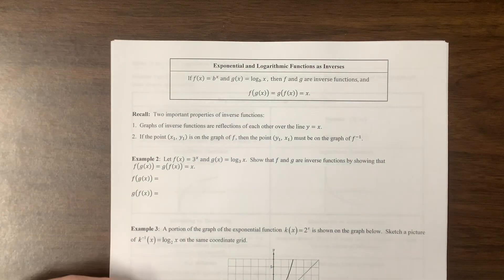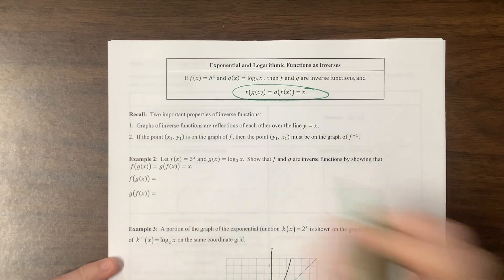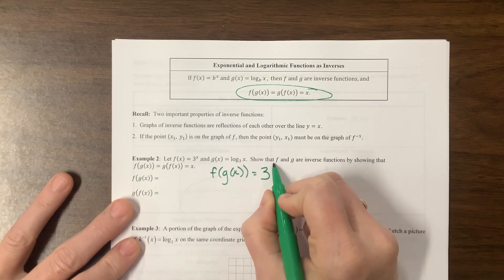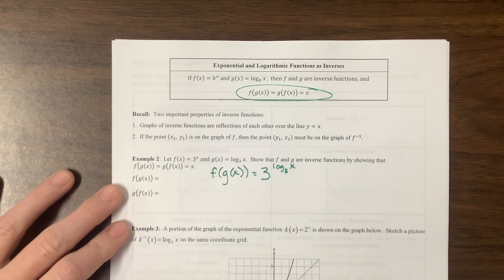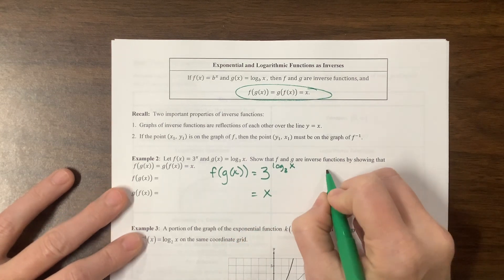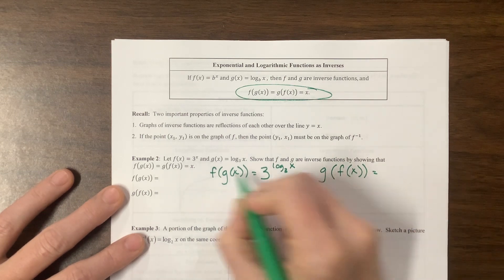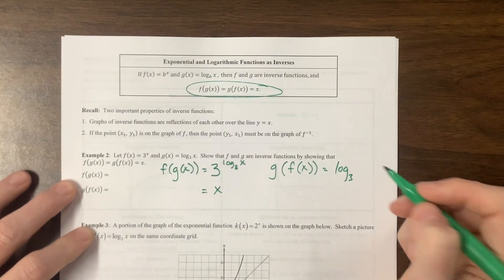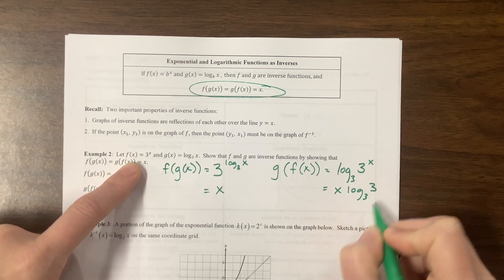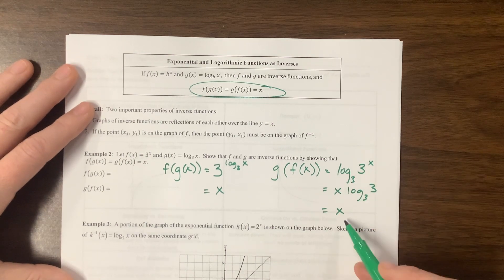An exponent and a log are inverse functions. Remember that inverse functions occur when f of g of x and g of f of x are both equal to x. So f of g of x equals f of log base 3 of x, which equals 3 to the log base 3 of x — and when those bases are the same, we're just left with x. The other one: g of f of x equals log base 3 of 3 to the x. The exponent comes out in front, giving us x times log base 3 of 3, which is x times 1, so just x. You can also recognize that log base b of b to the x equals x.